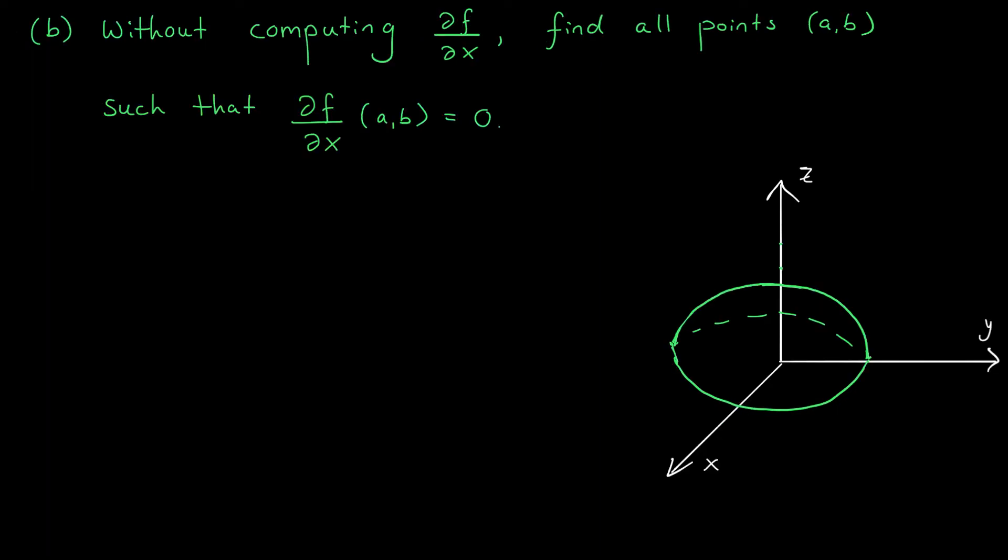Okay folks we're now moving on to part b. Without computing this partial derivative, find all points ab such that the partial derivative of f with respect to x at ab is equal to 0. Now you might think, how the heck am I supposed to do this without computing the partial derivative? But now think back to part a. We just graphed this function.